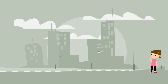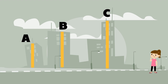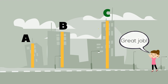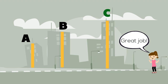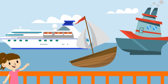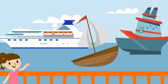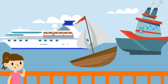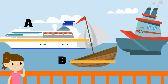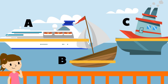Can you help her choose among building A, B, or C? That's right, building C is the tallest! Her town is on the seaside, so she also came to see the ocean. Right now she sees three ships — which one of them is the longest: ship A, ship B, or ship C?